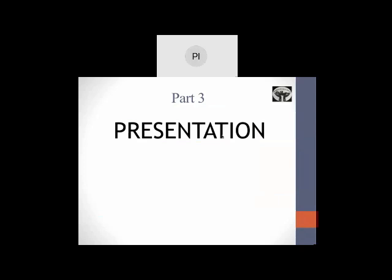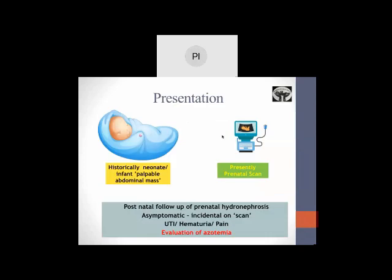Coming to the third part of my presentation, which deals with the presentation of ureteropelvic junction obstruction. Historically, the most common presentation was a neonate or infant with a palpable abdominal mass. Today, the most common thing is a prenatal scan which detects the presence of hydronephrosis. Postnatal follow-up of prenatal hydronephrosis hence becomes the most important form of presentation. Sometimes it is also picked up in asymptomatic children who undergo scans for some other purposes in early infancy.